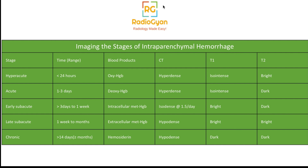In the subacute stages, deoxyhemoglobin is converted to methemoglobin. In the early subacute stage, methemoglobin is still intracellular and has limited effect on T2, so T2 remains hypointense. However, on T1 there is a bright appearance, especially at the periphery. In the late subacute stage, methemoglobin escapes from the RBCs into extracellular space, causing both T1 and T2 bright appearance — characteristic of a late subacute bleed.